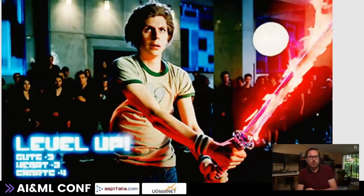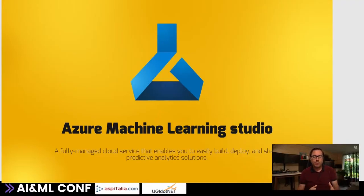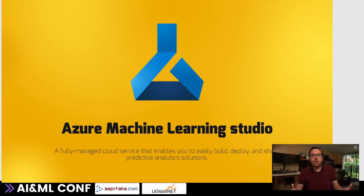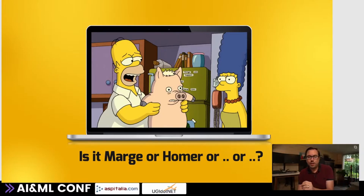We're going to talk about how we can train our own models in the PyTorch framework, so we have to level up a little bit. Azure Machine Learning Studio - or Machine Learning Workspace, or in short, Azure Machine Learning - is a fully managed cloud service that enables us to build, deploy, and share models with each other, so we can work as a team to create our models and run them in production. Today, we're going to answer the question: is it Marge, Homer, Bart, or Lisa on the image? So it's going to be a classification model.